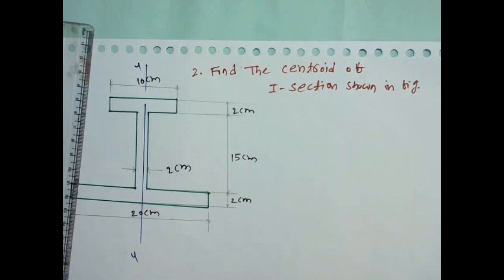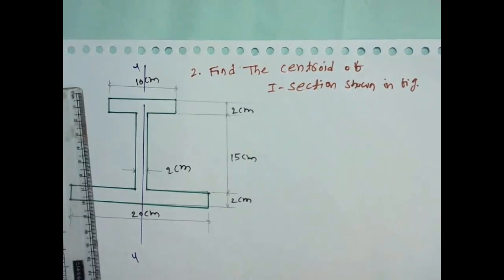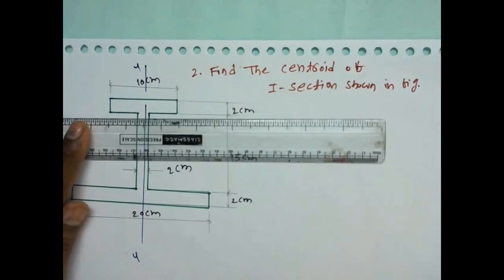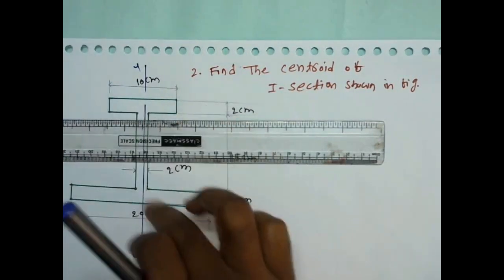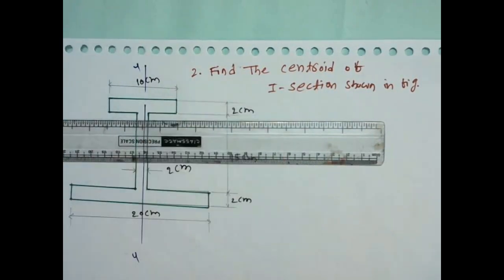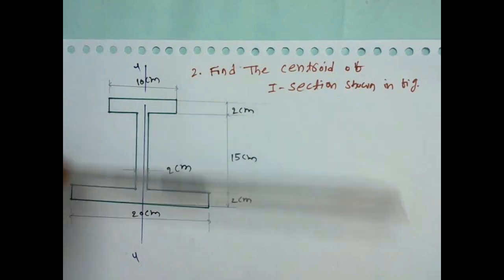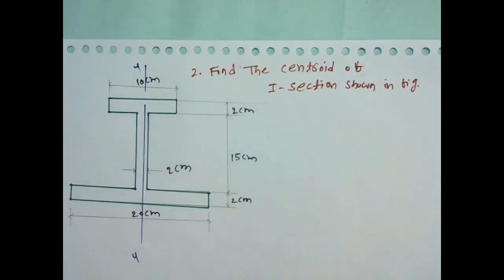Since it is symmetrical about the Y-axis, we don't need to find the Y-bar. Now drawing a horizontal line: above and below are not symmetrical. That's why we have to find the centroidal X-axis.